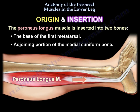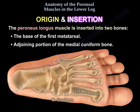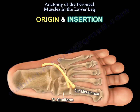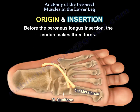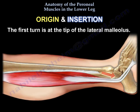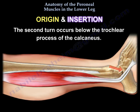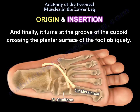Origin and Insertion. The perineus longus muscle is inserted into two bones: the base of the first metatarsal and the adjoining portion of the medial cuneiform bone. Before the perineus longus insertion, the tendon makes three turns. The first turn is at the tip of the lateral malleolus. The second turn occurs below the trochlear process of the calcaneus. And finally, it turns at the groove of the cuboid, crossing the plantar surface of the foot obliquely.